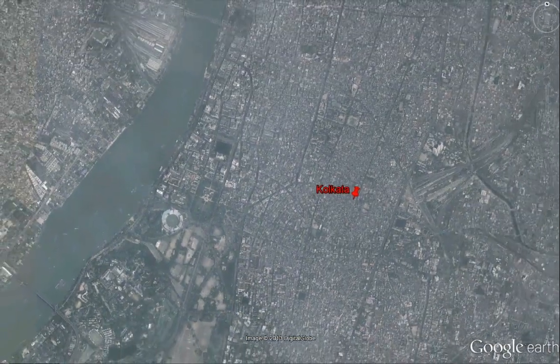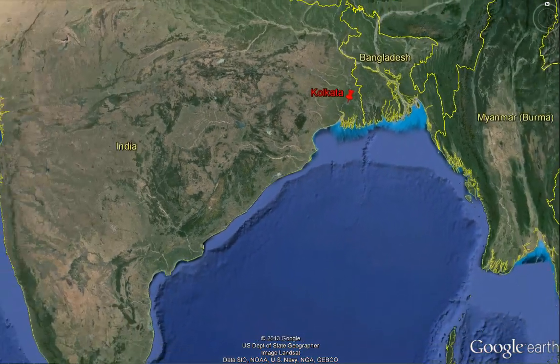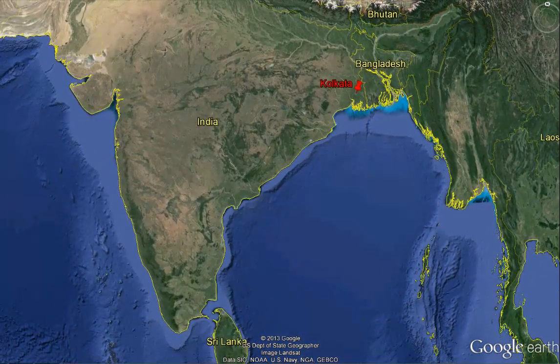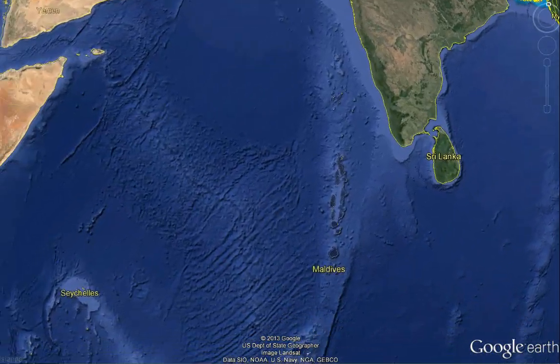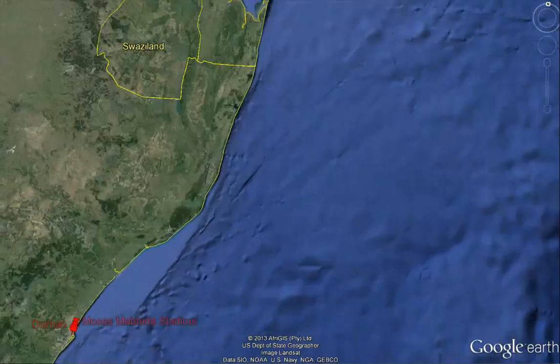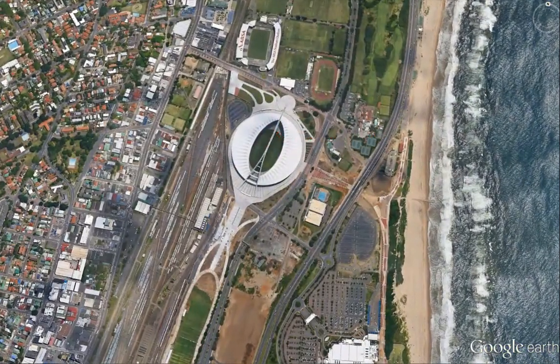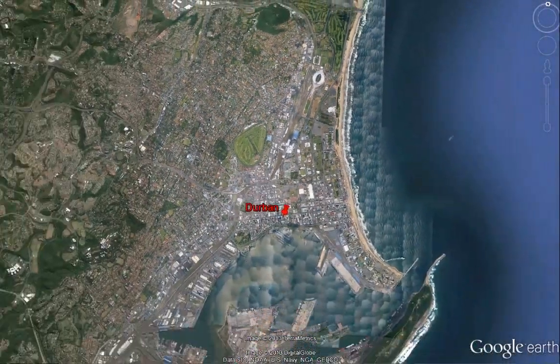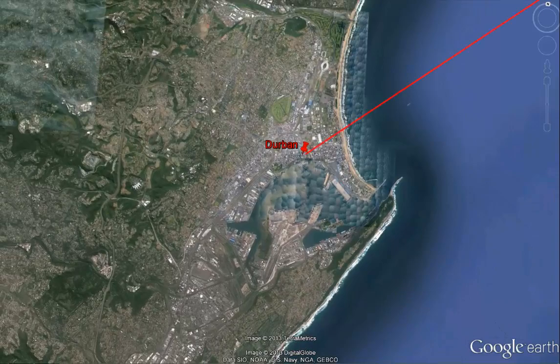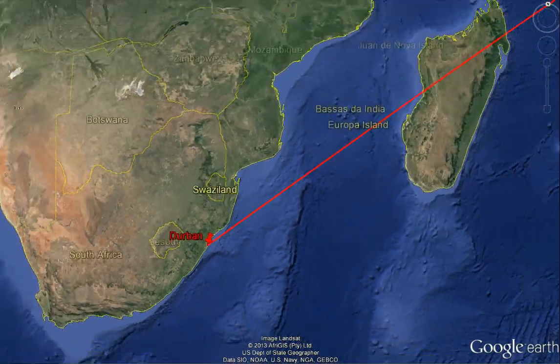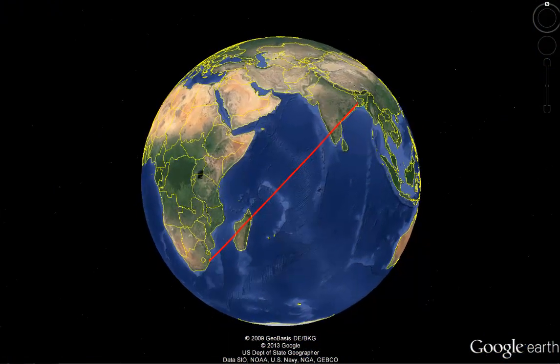This is the city of Kolkata in India. And here is Durban in South Africa. Drawing the great circle path between Durban and Kolkata will show us the shortest distance between the two cities on the surface of the sphere.